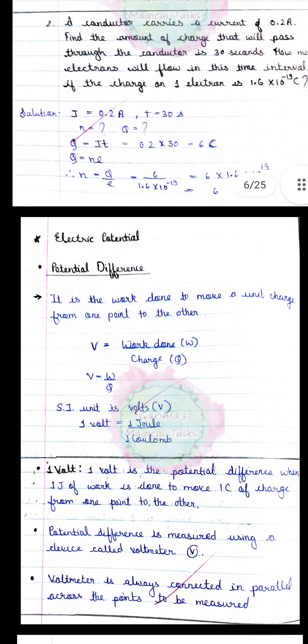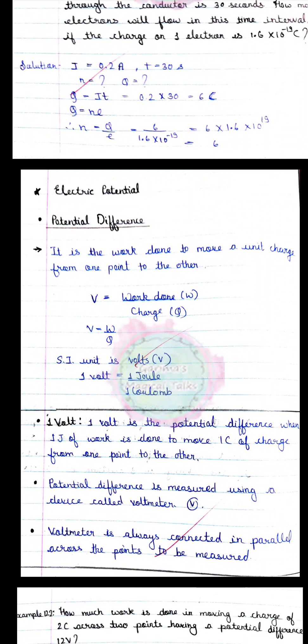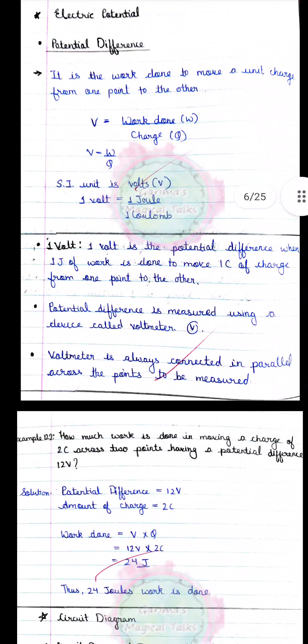Next is the potential difference. What is the potential difference? It is the work done to move a unit charge from one point to another point — this is the potential difference. The unit of the potential difference is volt, and it is measured by the instrument voltmeter.